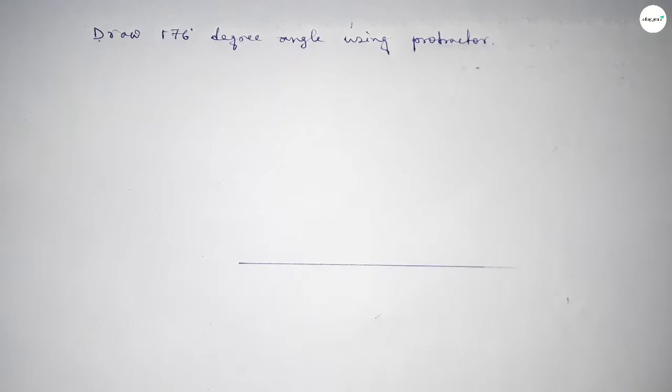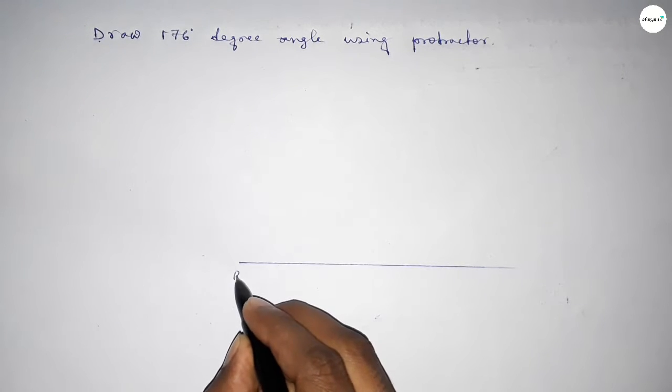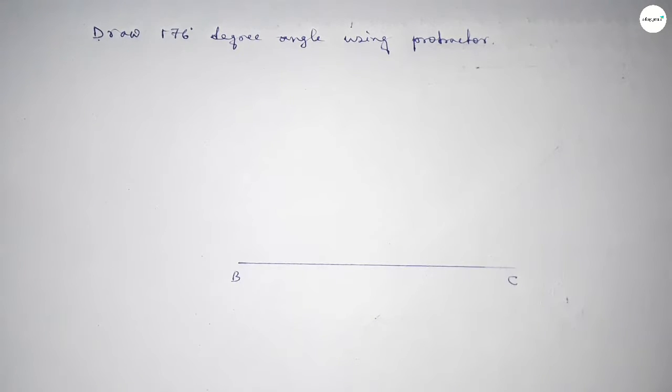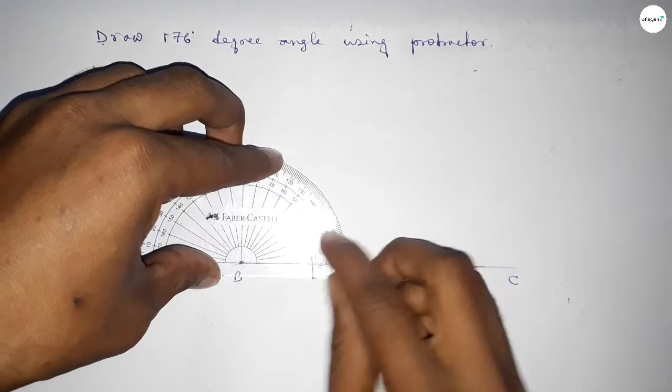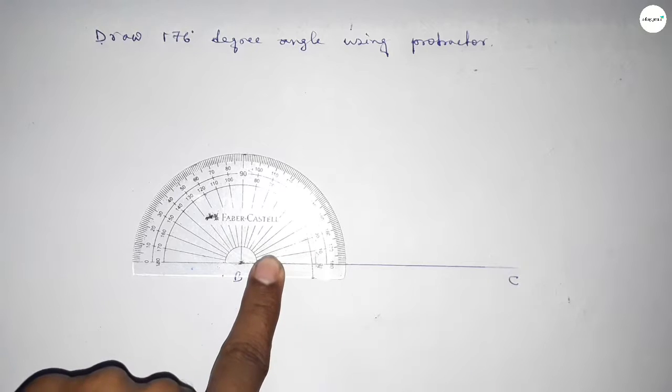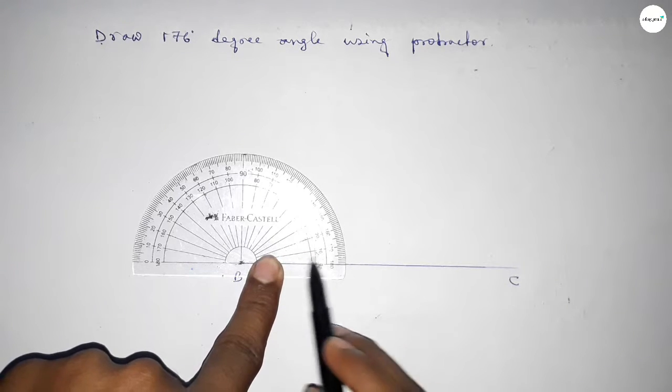So first drawing here a line, next taking here point B and here point C. Now putting the protractor on the point B perfectly, then counting the angles. So this is starting angle 0 degrees.